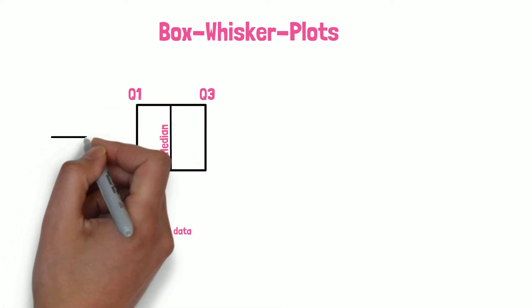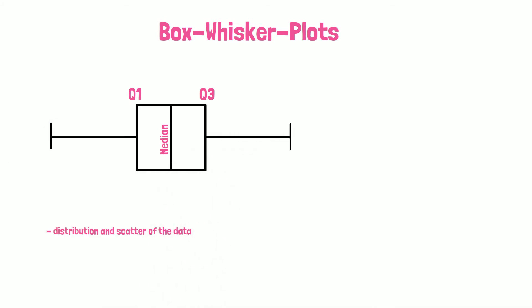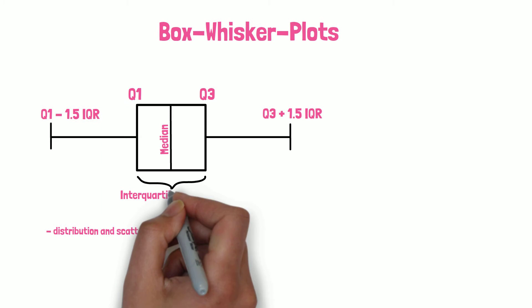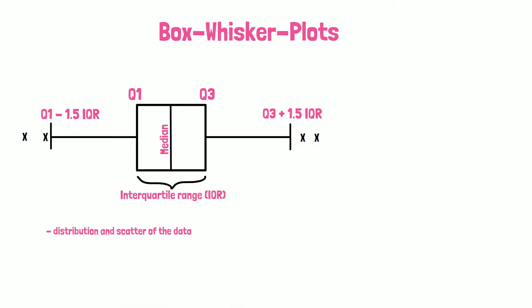The whiskers show the minimum and maximum values. If there are outliers, they are shown beyond these marks and are defined as those values which are more than 1.5 times of the interquartile range below Q1 or above Q3. They are marked additionally. Box whisker plots can give a clear overview of the data distribution, for example, the distribution of weights in a sample.